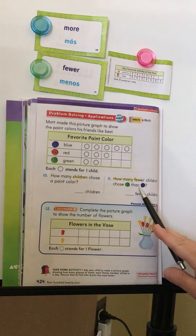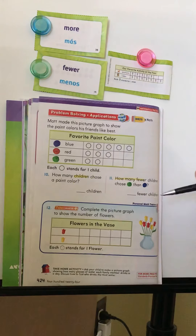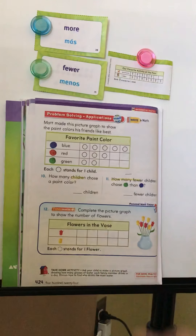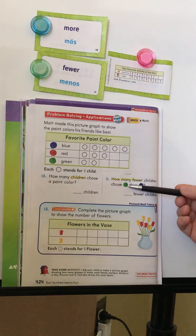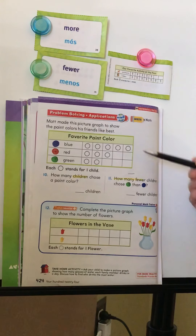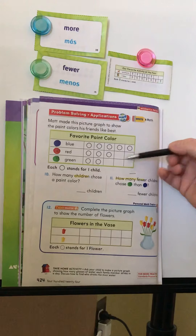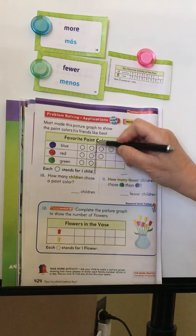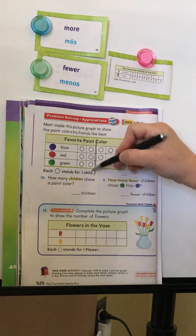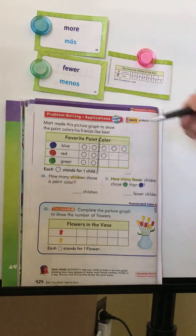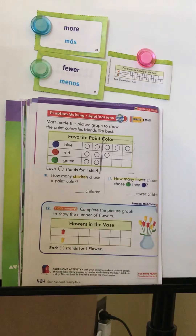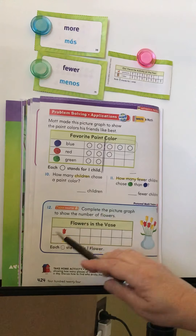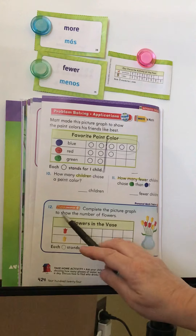Question eleven: how many fewer children chose green than blue? 'How many fewer' always means subtract. See how many green and how many blue there are. Blue is the bigger number, so subtract green from blue. Or you can draw a line to compare — where blue and green are the same, the remaining amount on the blue side is how many fewer.